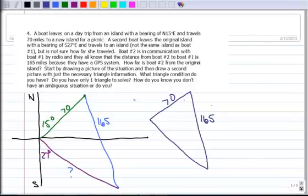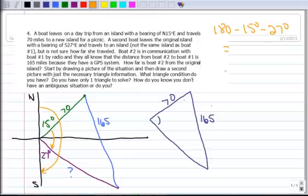Alright, so I need an angle, and I'm going to calculate this angle right here. So I do know that this whole entire angle right here is 180 degrees. Alright, so if I pick 180 degrees, if I subtract the 15 degrees, and if I subtract the 27 degrees, that's going to leave me the angle right in here. And when I do that, I end up with 138 degrees.